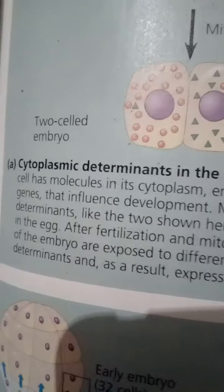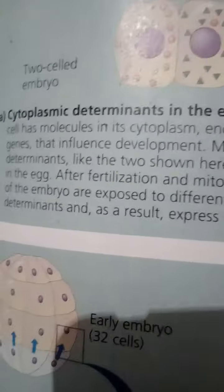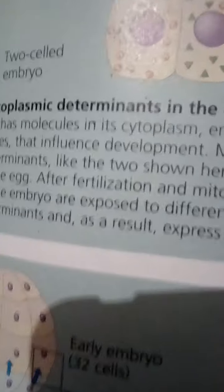Drosophila development is a cascade of gene activation. Pattern formation has been most extensively studied in Drosophila melanogaster, where genetic approaches have had spectacular success. These studies have established that genes control development and have led to an understanding of the key roles that specific molecules play in defining position and directing differentiation. Combining anatomical, genetic, and biochemical approaches, researchers have discovered developmental principles common to many other species, including humans.